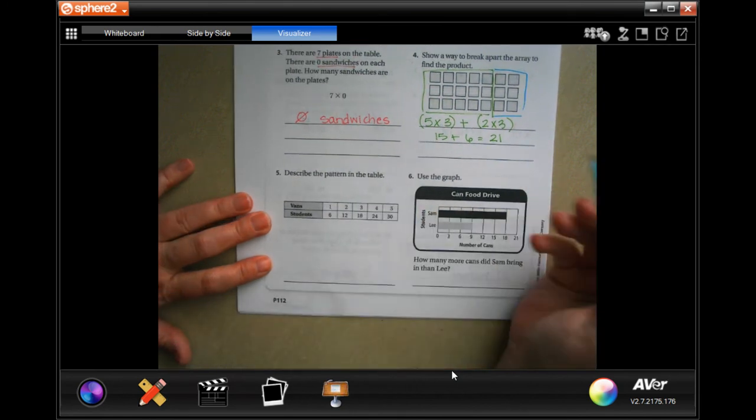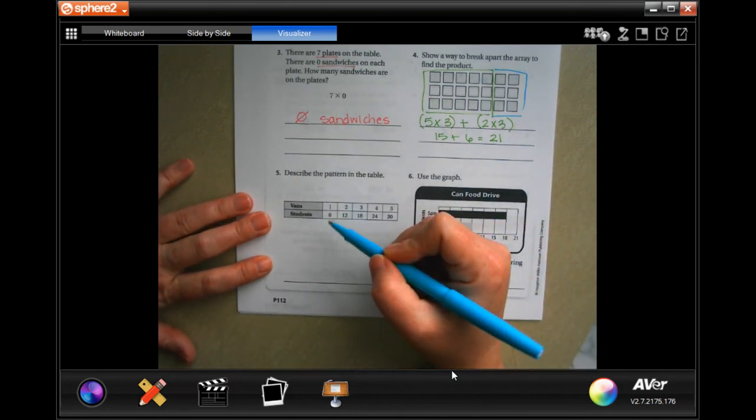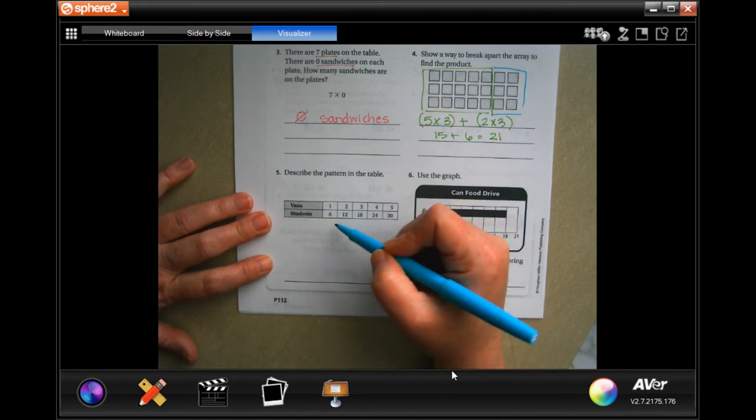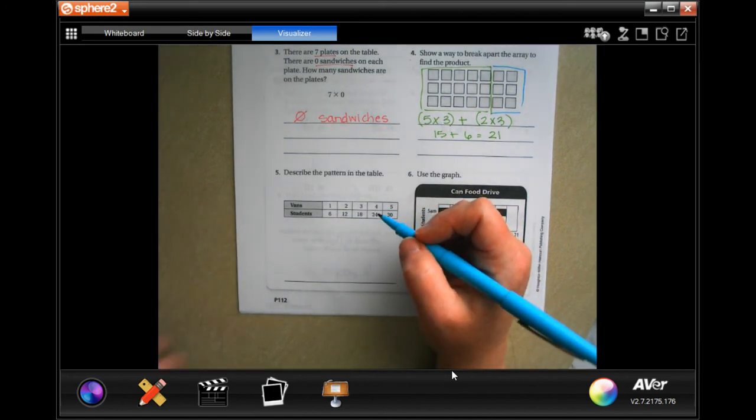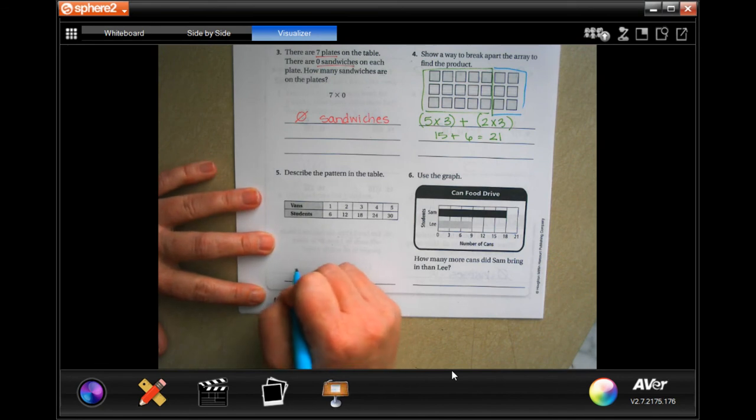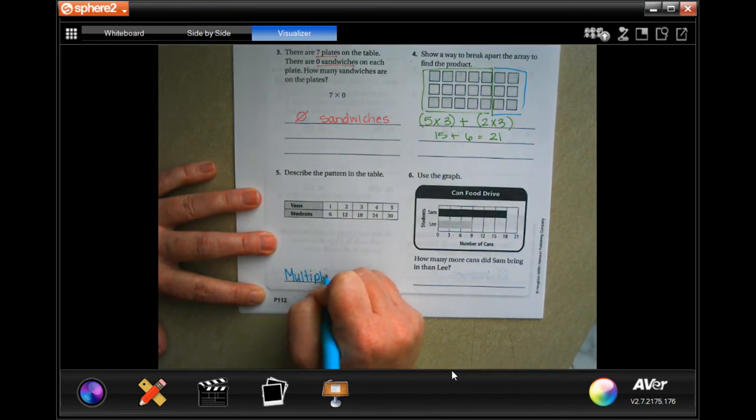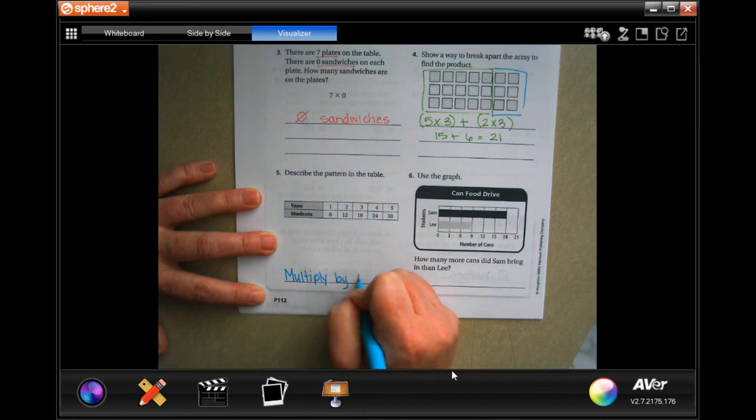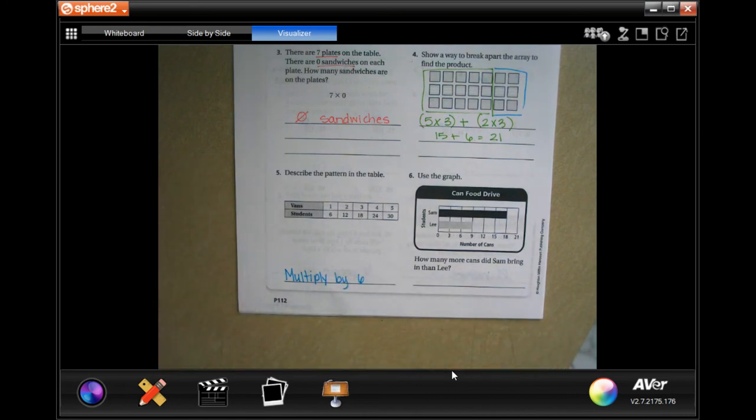Describe the pattern on the table. Well, we're going to multiply the number of vans by six to get the number of students. Multiply by six.